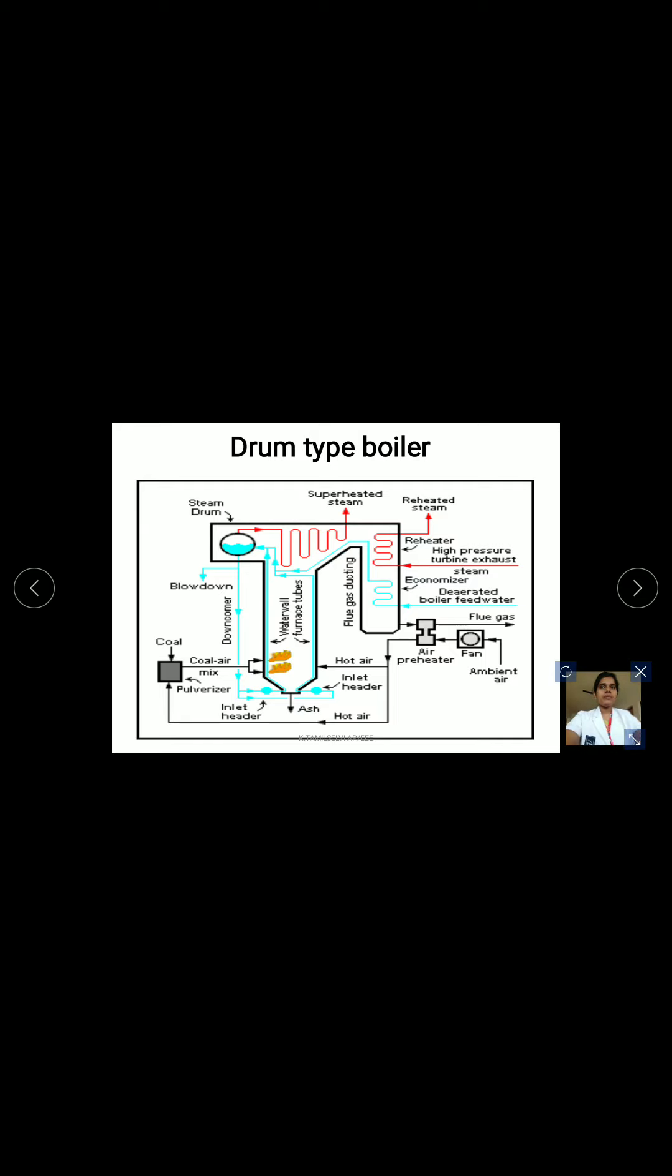The steam and water mixture enters the steam drum. The drum internals consisting of demonstrators separate the water droplets from the steam, producing dry steam. The schematic of drum type boiler by natural circulation and drum type boilers by forced circulation. The saturated water at the bottom of the steam drum flows down.